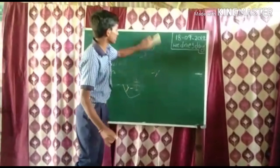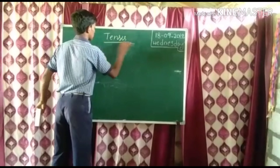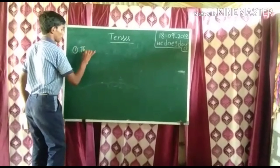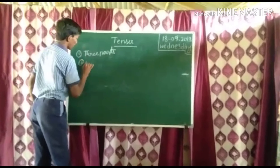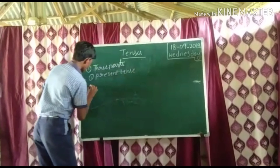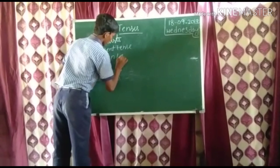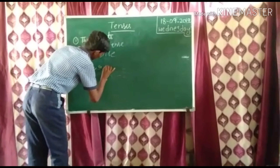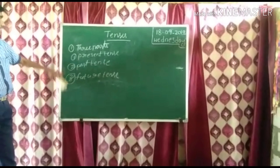Next, we want to discuss about tenses. Do you know tenses are divided into 3 parts: the first one is present tense, second one is past tense, and third one is future tense. Now I am going to explain about these 3 tenses.